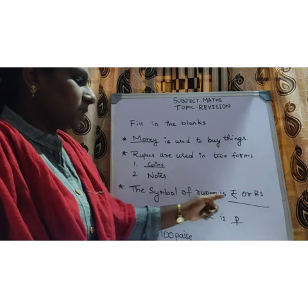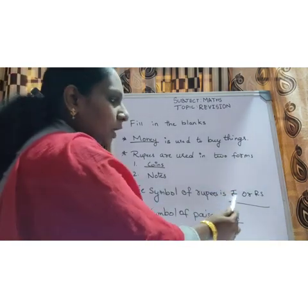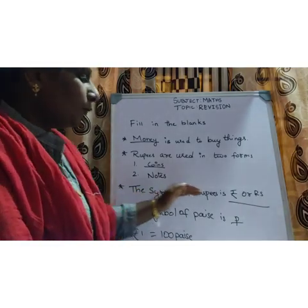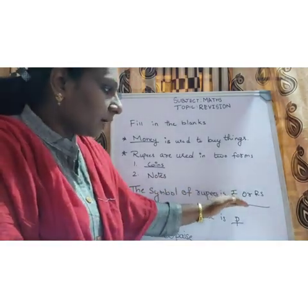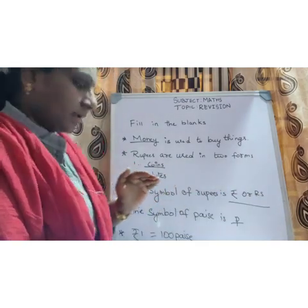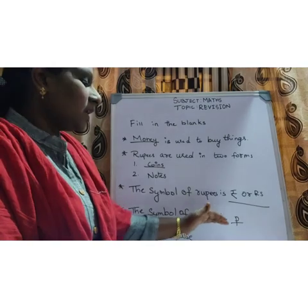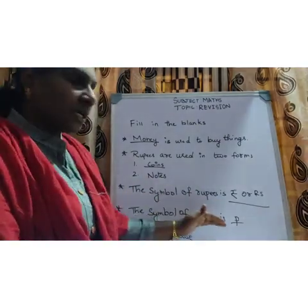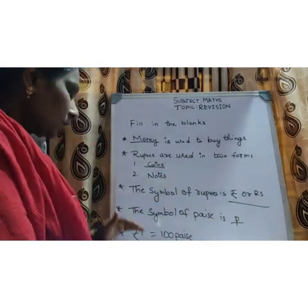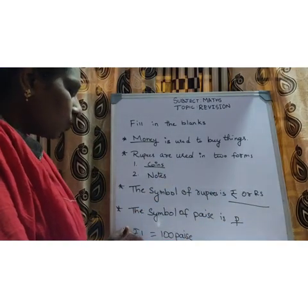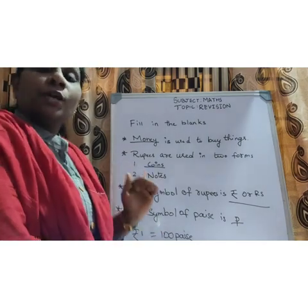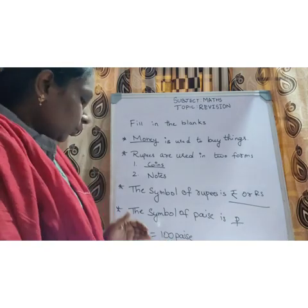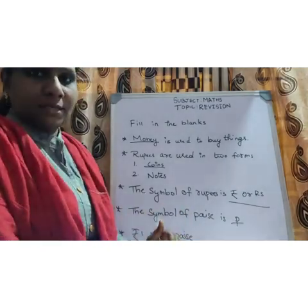The symbol of rupees — you can write it as the rupee symbol or you can write it as Rs. The symbol of paise is P, small p. So the next is: rupees 1 equals 100 paise. In 1 rupee, how many paise are there? There are 100 paise.